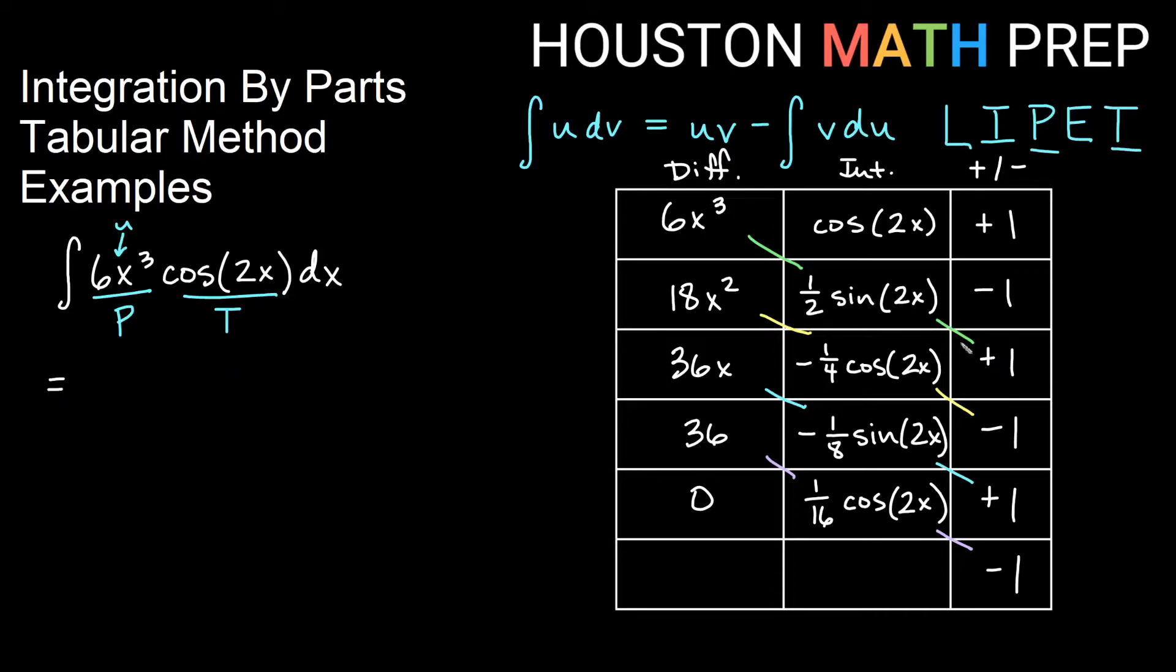This times this times this. Six times a half times a positive. That will give me 3x³ sine 2x for the first term. The next one, I have a negative here and a negative here and a negative there, so that's actually going to be a plus.